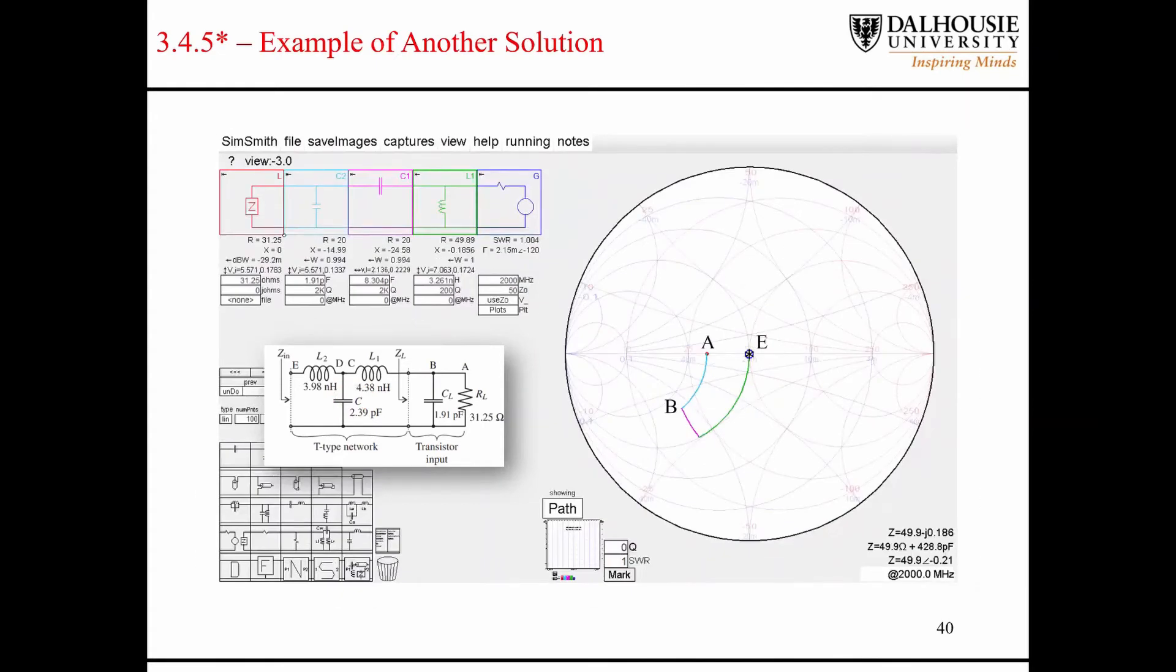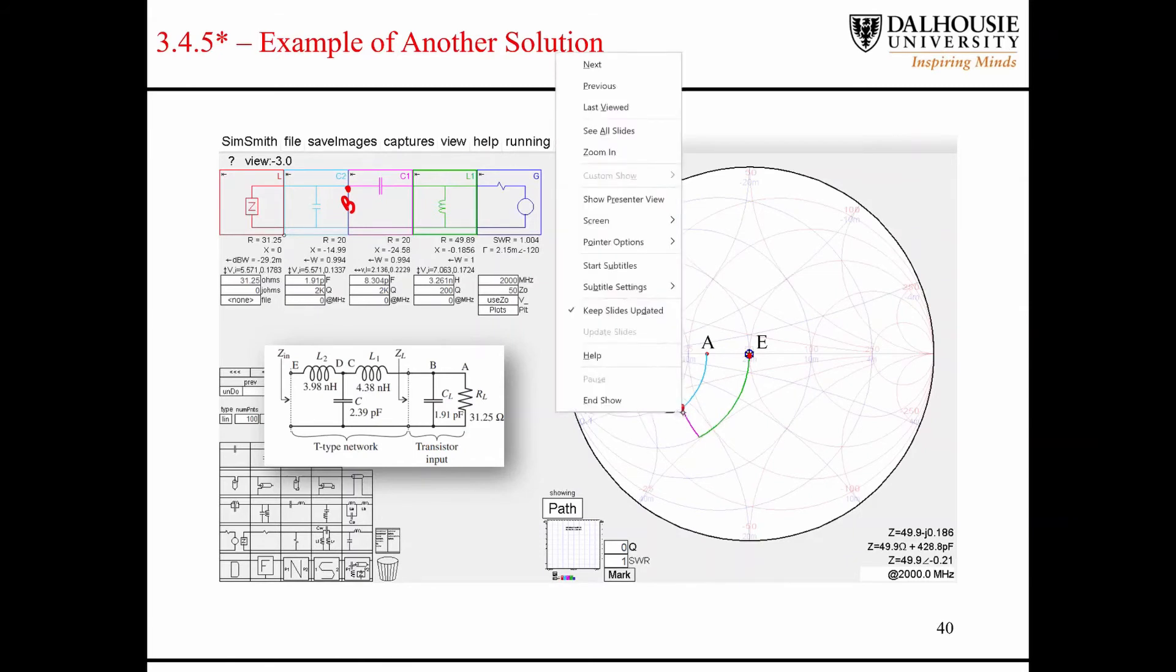Another thing we could have done was use a completely different network. Right here is point B. My goal was to get to the center of the Smith chart. I want to get to the center of the Smith chart with as few moves as possible. I saw that if I rotate down like this and get onto this circle of constant conductance, then I know I'll be able to rotate my way back up to the center of the Smith chart. Using the fact that adding a series capacitor is going to rotate me downward on the Smith chart, I inserted a series capacitor and tweaked the value until I rotated down and ended up on this curve.